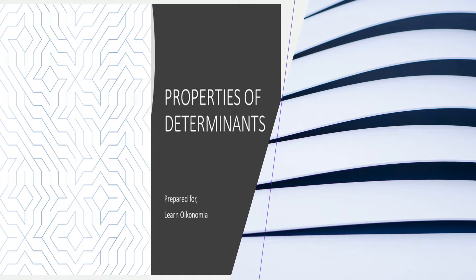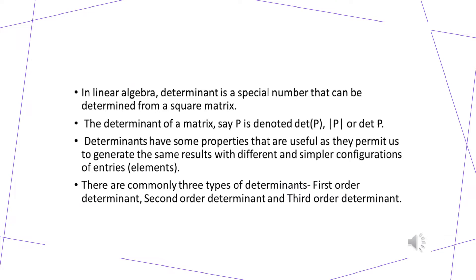Welcome back to Learn Economia. Having discussed matrix styles, in this video we will be looking into determinants and its properties. In linear algebra, a determinant is a special number which can be determined from a square matrix. You will be given a matrix and from the matrix you are going to simplify it. Determinants are considered to have some peculiar properties and are very important and useful.